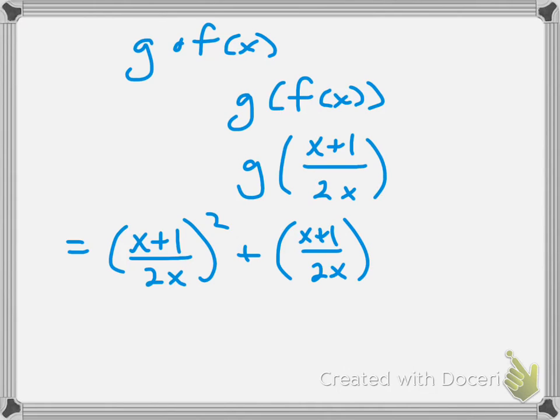So, this is my setup. This is the most important part. Now, I want to simplify as much as I can. In other words, I'm going to have to apply the power 2 to both my numerator and denominator. So, my numerator, I'll have x plus 1 quantity squared over 2x squared.